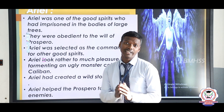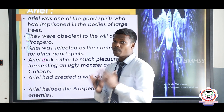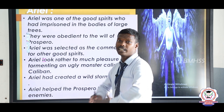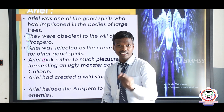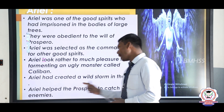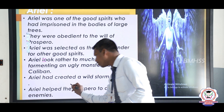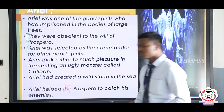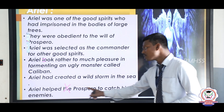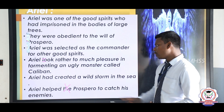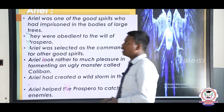Ariel had created a wild storm in the sea — that is what we understand by 'The Tempest.' The tempest is nothing but a storm. Ariel helped Prospero to catch his enemies. Note: before the name of a person we are not supposed to use the article 'the,' because it is a proper name.